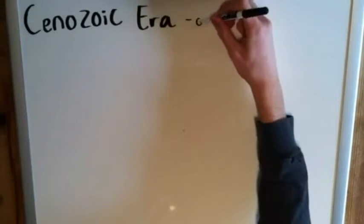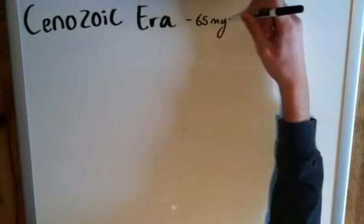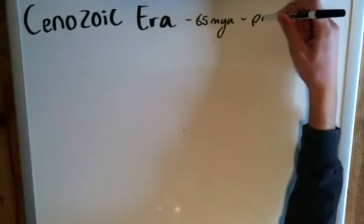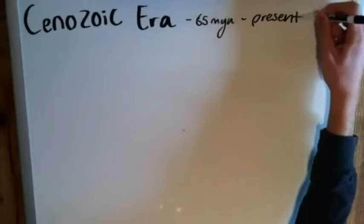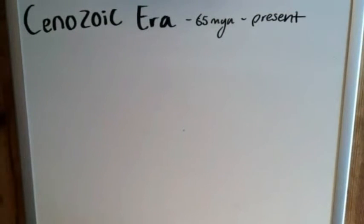Hey everyone, welcome back. We're finishing up our little journey through geologic time — here we have the Cenozoic Era, following after the Mesozoic Era as we discussed in our last geologic history video. One of the interesting things you'll notice right off the bat is that it goes from 65 million years ago to present day. 65 million years — it's a pretty short era, shorter than most periods in geologic time.